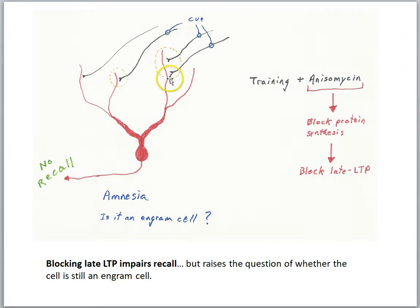So if you train the animal, this cell did get activated during training, but you simply prevented late LTP at these synapses. Well, now what happened after training, a couple days later, they put the animal back into the context. That's the cue. And now because these synapses were weak, there was no recall. The animal did not show fear.